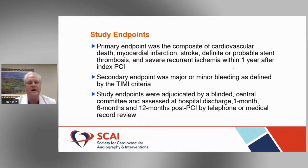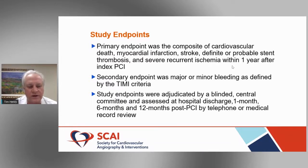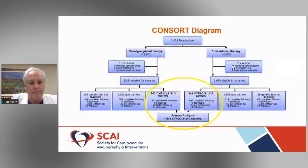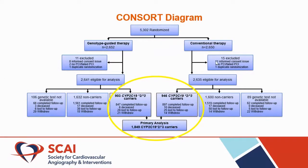The primary endpoint was the composite of cardiovascular death, myocardial infarction, stroke, definite or probable stent thrombosis, or severe recurrent ischemia within one year. The secondary endpoint was major and minor bleeding, adjudicated by a central committee — a very well-done trial. Early on, the trial determined that event rates were relatively small in both groups, so they increased the number of patients enrolled. Overall, over 5,000 patients were enrolled and it was very well balanced.